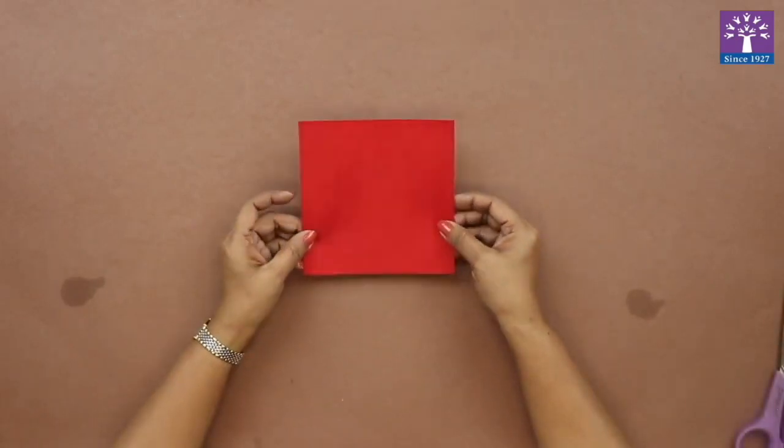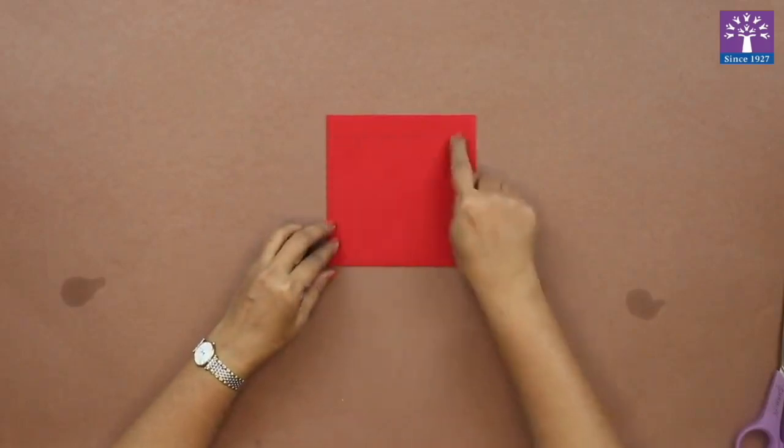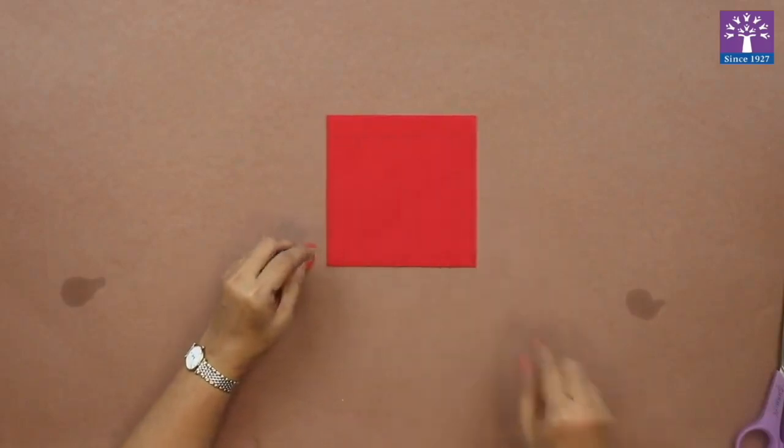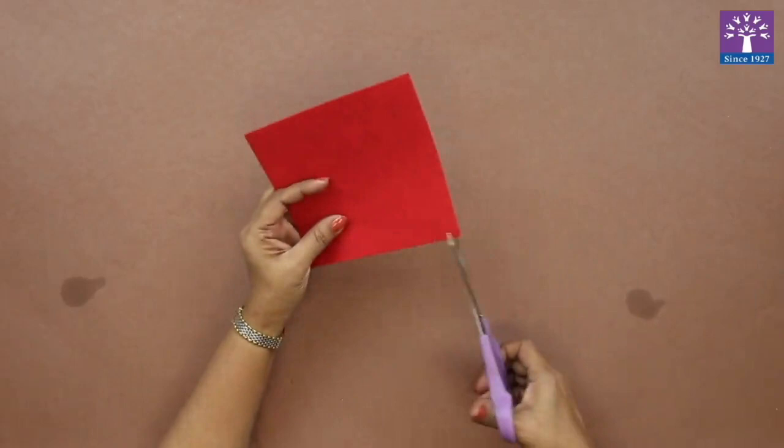Cut the felt cloth in the shape of your choice. Here I have marked a square piece and I am going to cut this felt into a square shape.